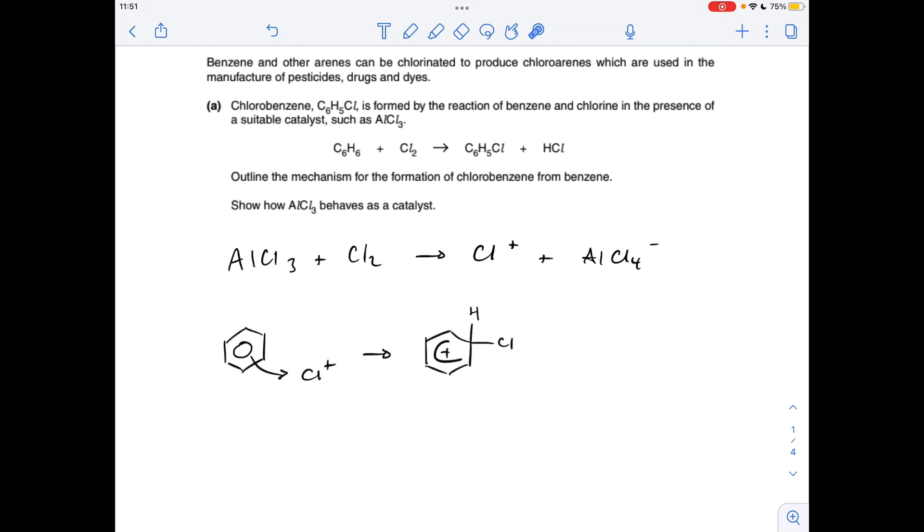Next part of the mechanism, we take a pair of electrons from the pi electron cloud in the benzene ring to the electrophile, and that's going to create this intermediate. So I've chosen to put the substitution here, so we show the hydrogen, obviously the chlorine's now attached.